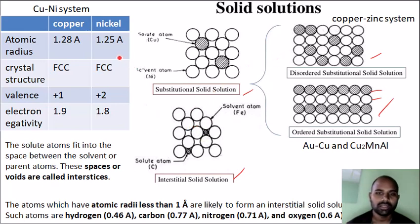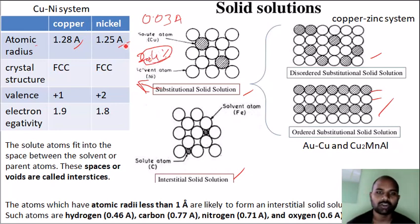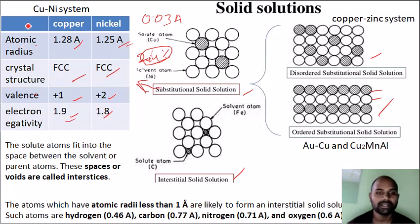Let's look at the substitutional solution example: the copper and nickel system, applying Hume-Rothery's rule. Copper has an atomic radius of 1.28 Angstroms, and nickel has an atomic radius of 1.25 Angstroms. The difference is 0.03 Angstroms. The percentage difference is 0.03 divided by 1.25, which is 2.4% — well below the 15% limit, so it is accepted. Crystal structure: copper is FCC and nickel is FCC — accepted. Valence and electronegativity are close: approximately 1.2 and 0.9, and 1.9 and 1.8 respectively — accepted. Since all four rules are satisfied, copper and nickel form a completely soluble solid solution.